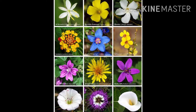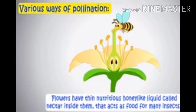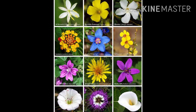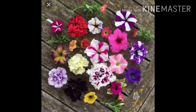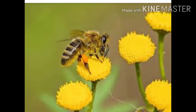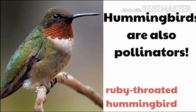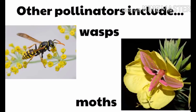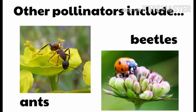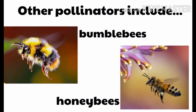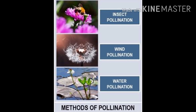There are different ways through which pollination occurs. Flowers have bright petals and strong fragrance that attracts insects and other animals. Flowers also have a honey-like liquid called nectar. Insects like butterflies, beetles, bumblebees and honey bees act as pollinators. Wind and water also act as agents of pollination.